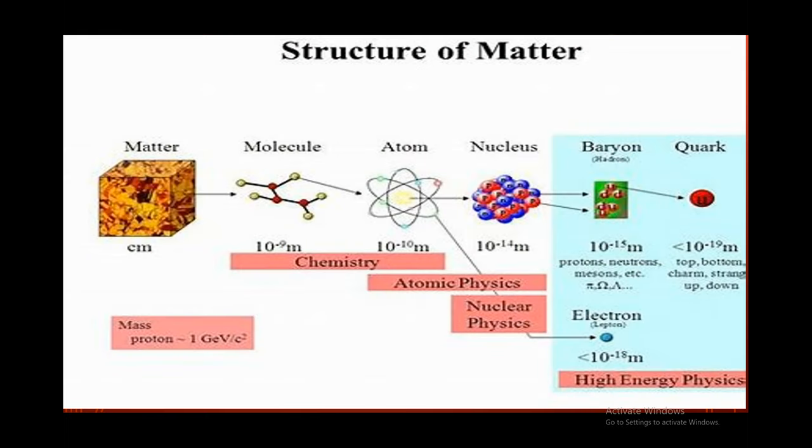Here is the division: you get the big thing, matter. Break it down, you get particles. Break down particles, you get molecules. You have atoms, your nucleus, and you have baryons and quarks, and also electrons.